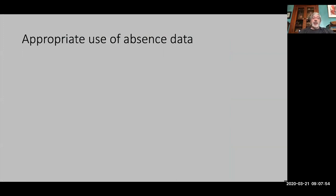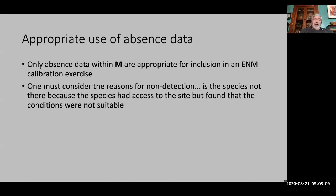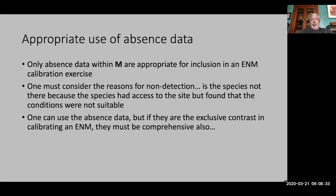To use absence data appropriately, they must definitely come from within the accessible area M — otherwise they are not appropriate for a niche modeling exercise. You need to consider the reasons for non-presence. Is the species not there because it had access to the site but found conditions unsuitable? That's useful information. But many other reasons would not be useful. If absence data are the only negative contrast to presence data when calibrating a niche model, they must also be comprehensive enough to define the tolerance limits of the species.